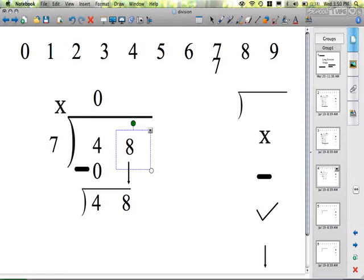So now, I'm going to divide again. Now I have 4 $10 bills that I couldn't divide before, so I'm going to trade those in for 40 $1 bills plus the 8. So now I have 48 $1 bills. So 7 goes into 48, 6 times. 6 times 7 is 42.